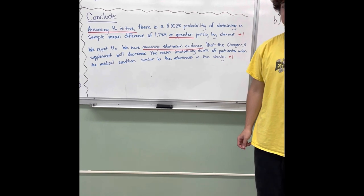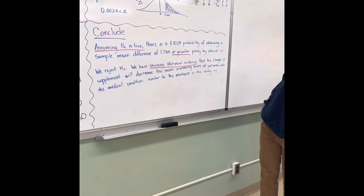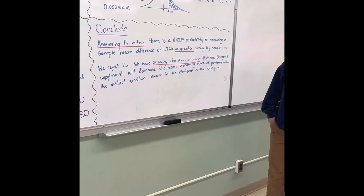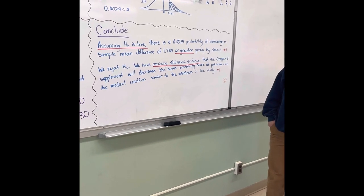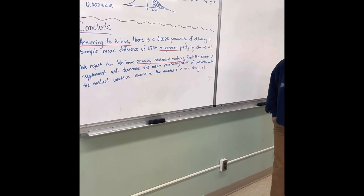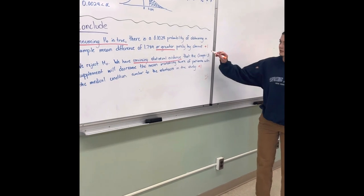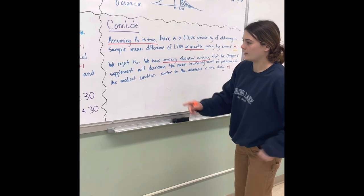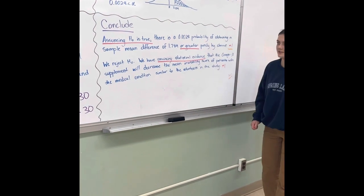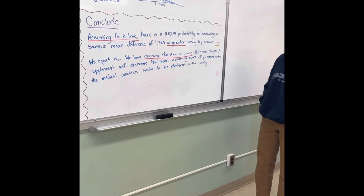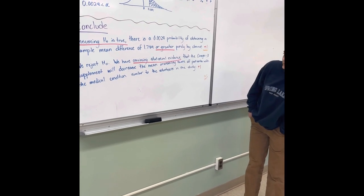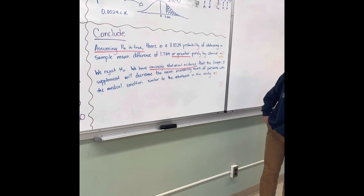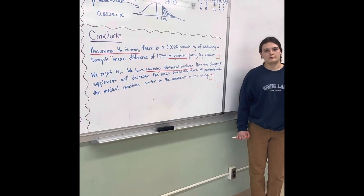We get a point for the p-value. For the conclusion: assuming H-naught is true, there is a 0.0028 probability of obtaining a sample mean difference of 1.79 or greater purely by chance — you get a point for that. We reject H-naught because we have convincing statistical evidence that the omega-3 supplement will decrease the mean irritability score of patients with medical conditions similar to the volunteers in this study. You also get a point for that.